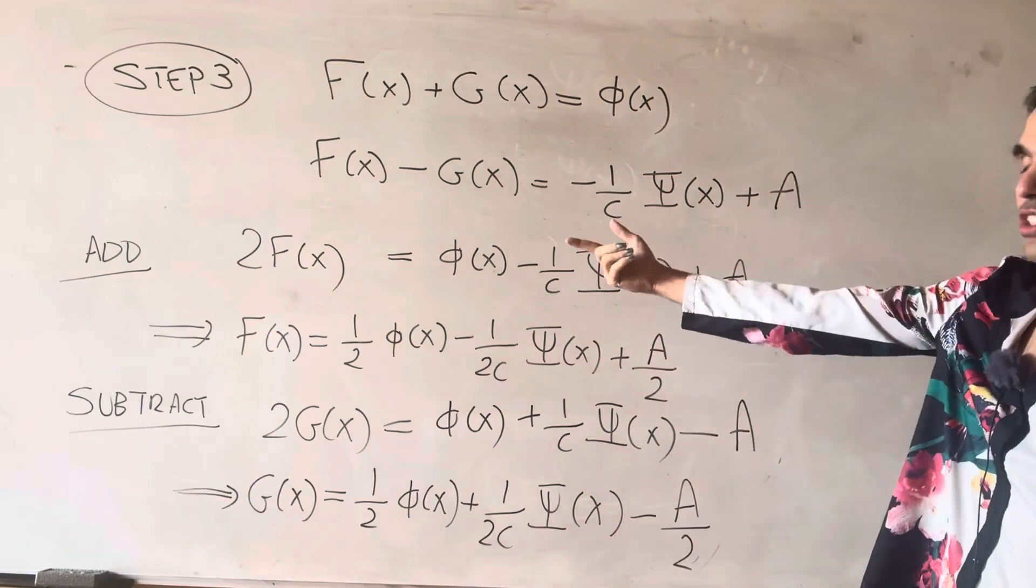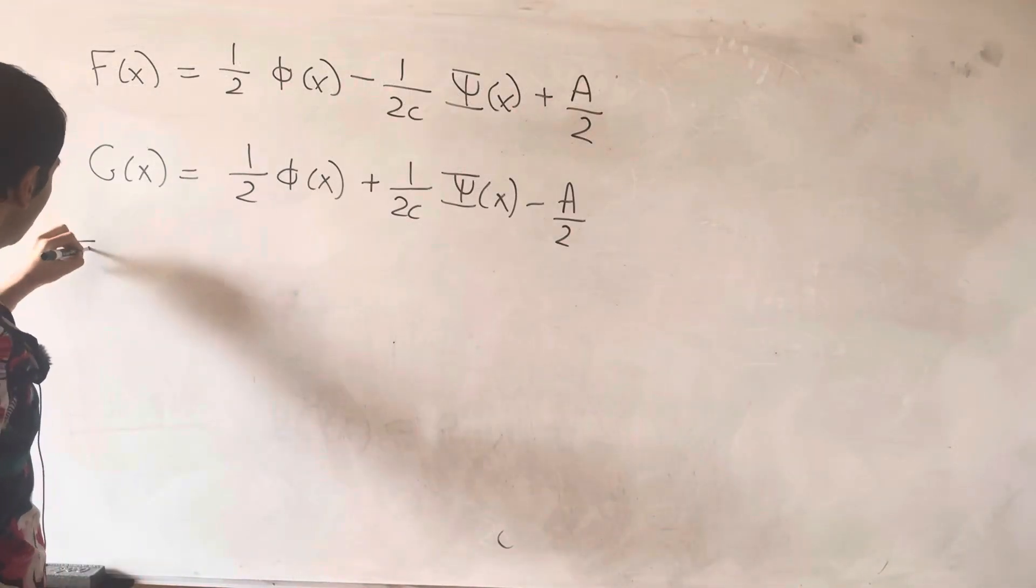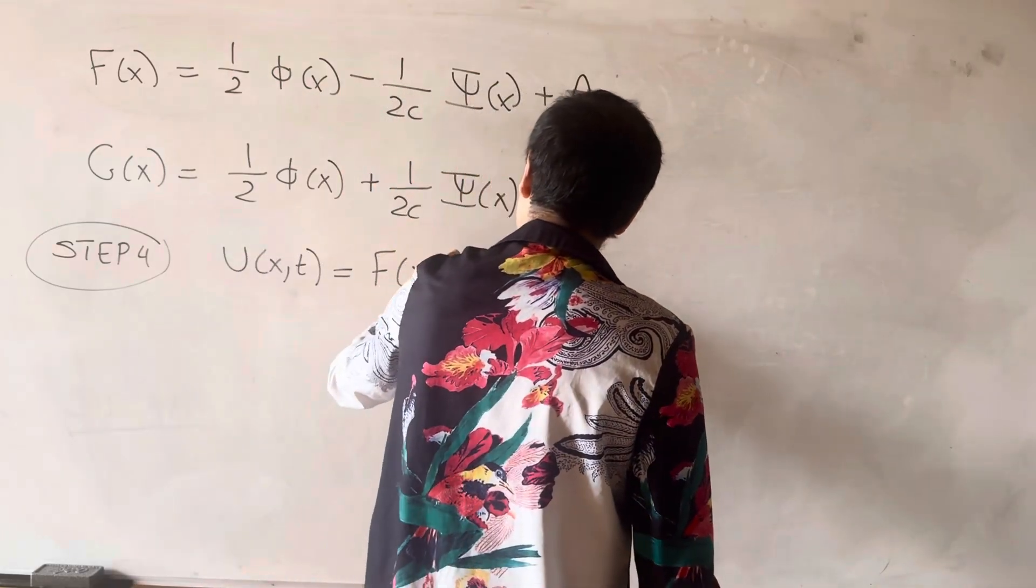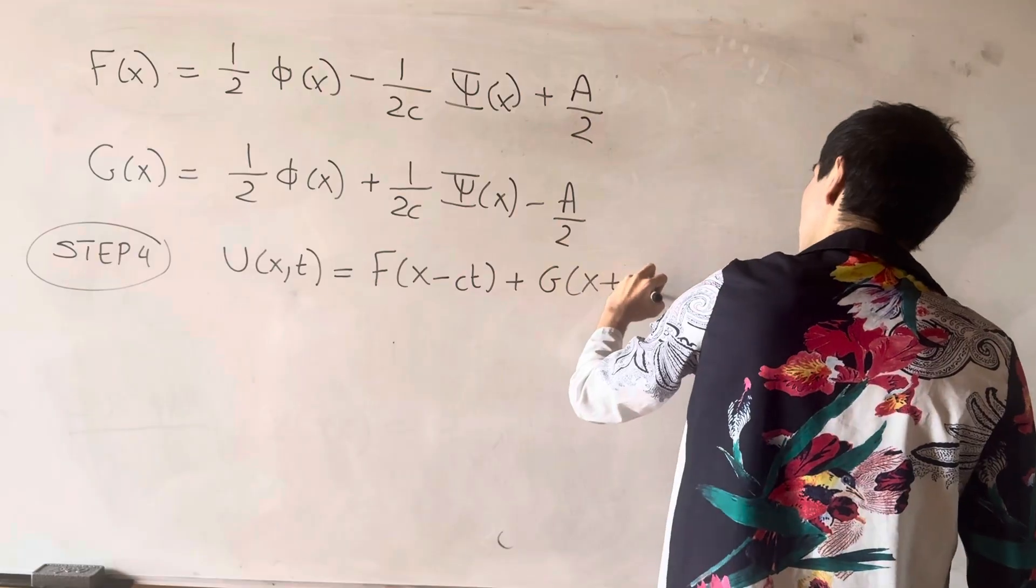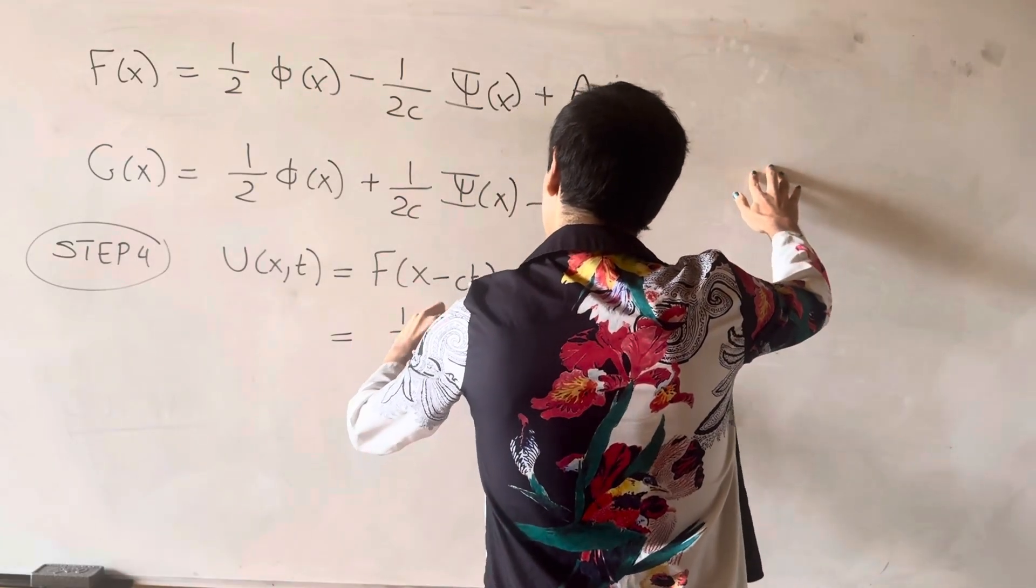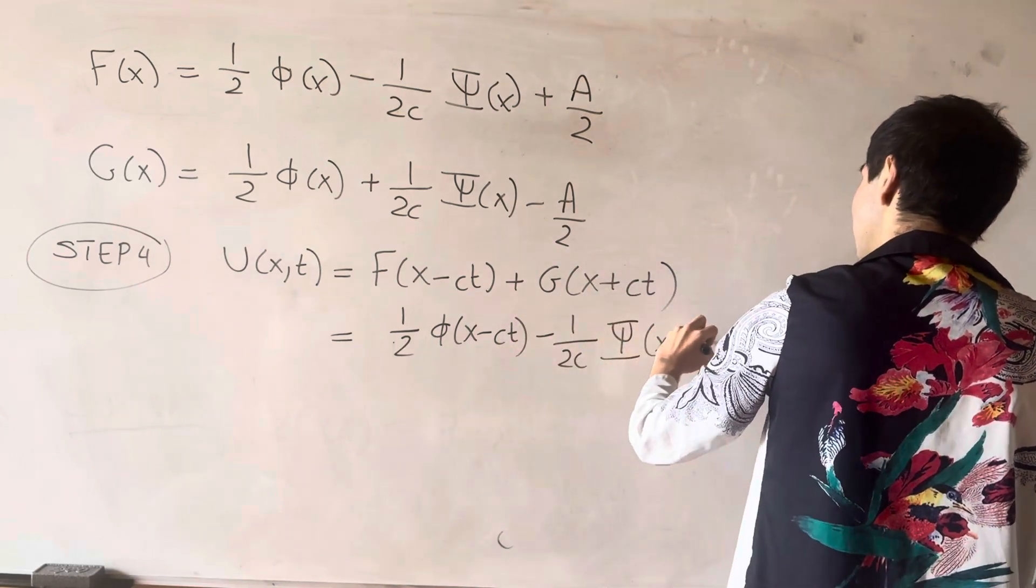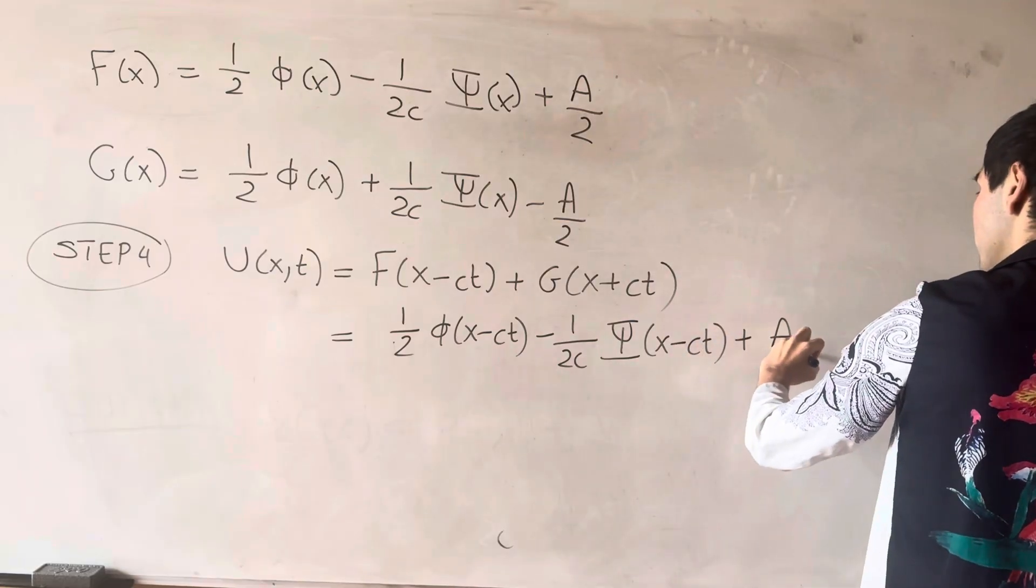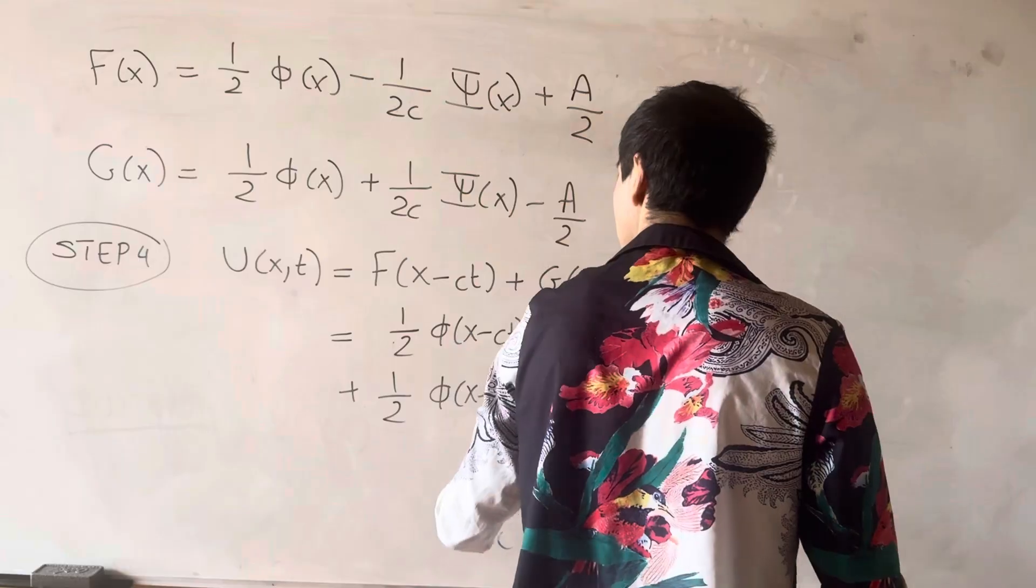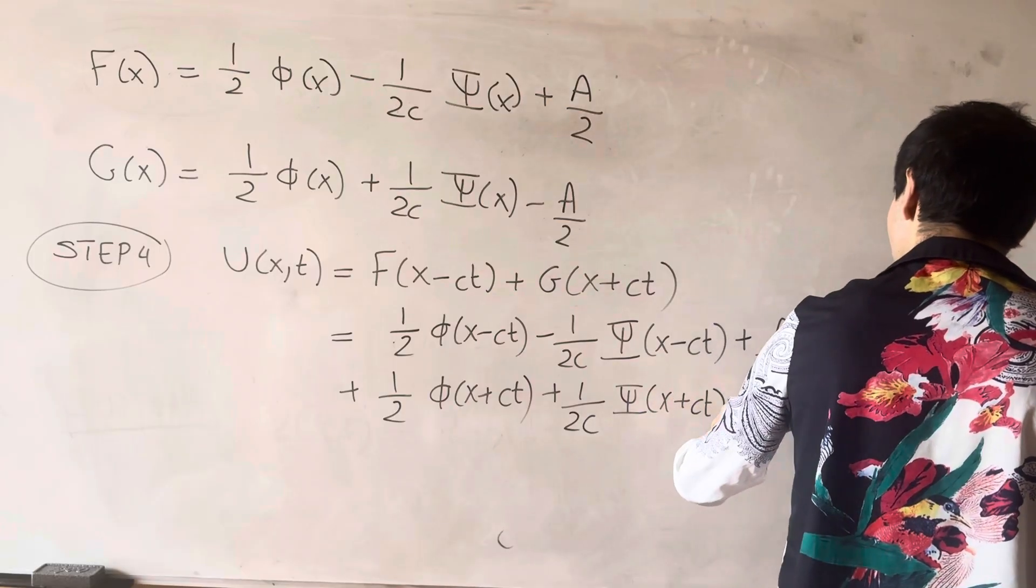And the last thing we need to do is just plug in f and g in our formula for u. So the final step is to use u of x,t is f of x minus ct plus g of x plus ct. And so this just becomes one half phi of x minus ct minus one over 2c Psi of x minus ct plus a over two. And then plus one half phi of x plus ct plus one over 2c big Psi of x plus ct minus a over two.